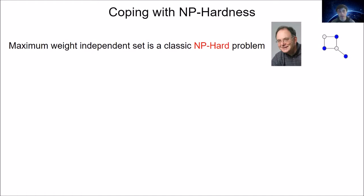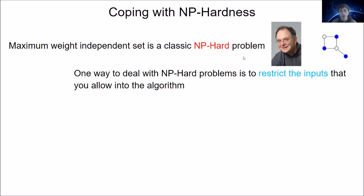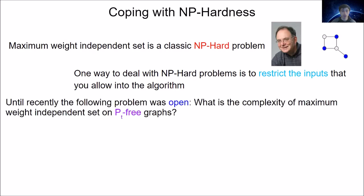The maximum weight independent set is a classic NP-hard problem — one of Karp's original 21 NP-complete problems. One way to deal with NP-hard problems is to restrict the kinds of inputs we allow into our algorithm. In that direction, we have the following problem which until recently was open: what is the complexity of maximum weight independent set on P_t-free graphs? A P_t-free graph is a graph which has no induced path on t vertices.